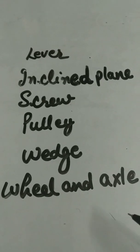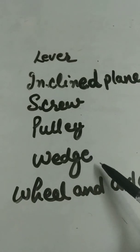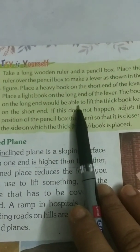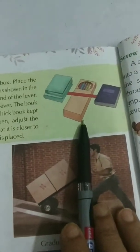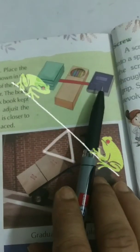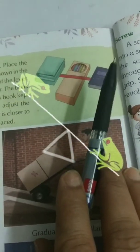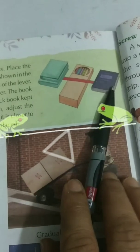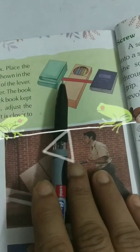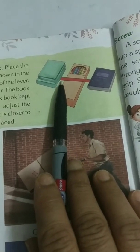We know six types of simple machines: lever, inclined plane, screw, pulley, wedge, and wheel and axle. There is one activity given in your book related to the lever. A pencil box and a scale are used, with two books on one side at short distance and one lighter book at a long distance. When we place the light-weighted book, it lifts the heavy books because of the longer distance of the lever.